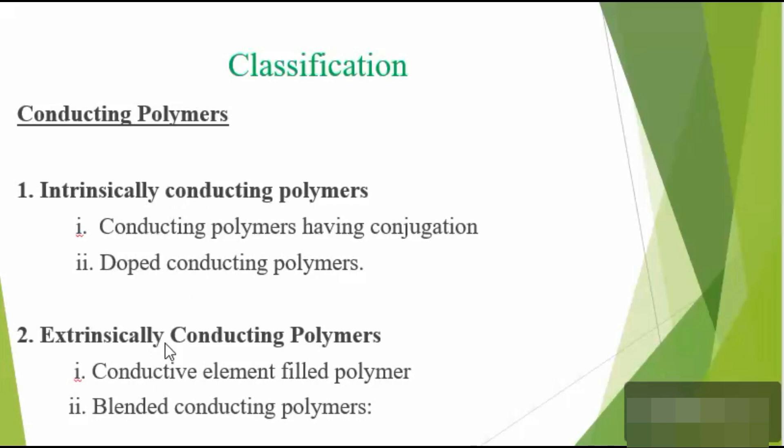Intrinsically conducting polymers have extensive conjugation in their polymer backbone, and it is responsible for their conducting property. They are classified into two types: conducting polymers having conjugation, and doped conducting polymers.